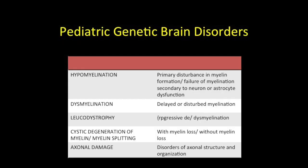Hypomyelination is a primary disturbance in myelin formation, or failure of myelination secondary to neuron or astrocyte dysfunction. Dysmyelination is delayed or disturbed myelination. Leukodystrophy is progressive de- or dysmyelination — a worse condition within this subtype. Cystic de- or dysmyelination, including myelin splitting, is further subdivided into conditions which cause myelin loss and conditions which do not. Axonal damage refers to disorders of axonal structure, organization, or both.